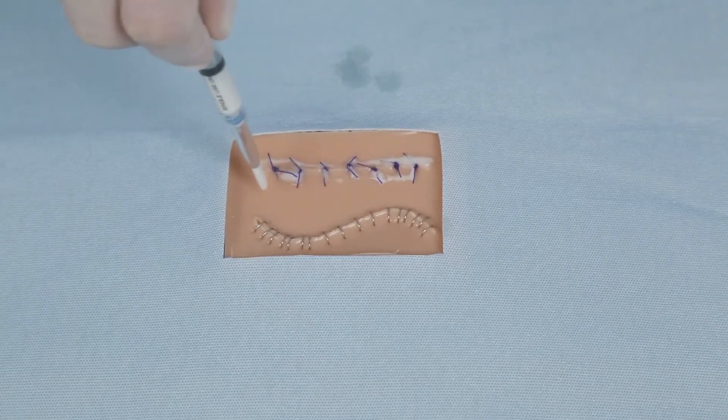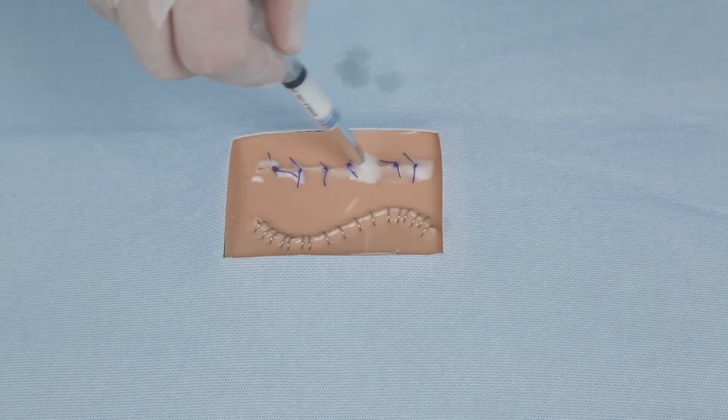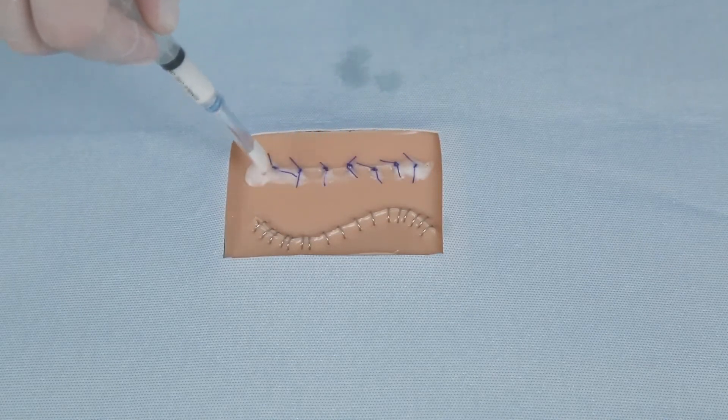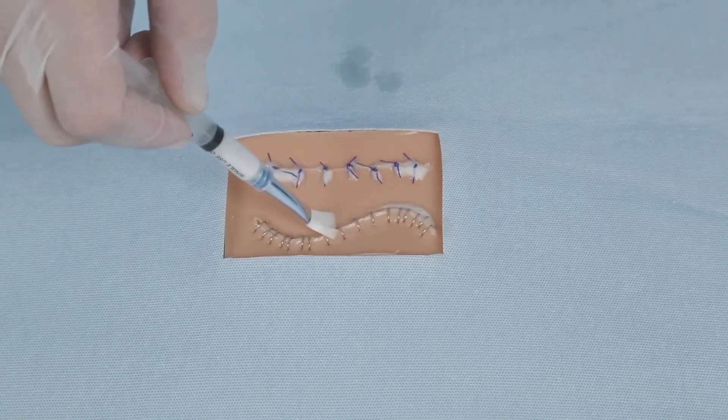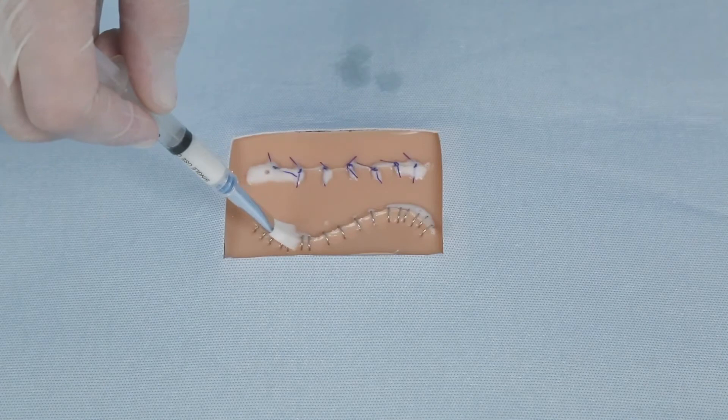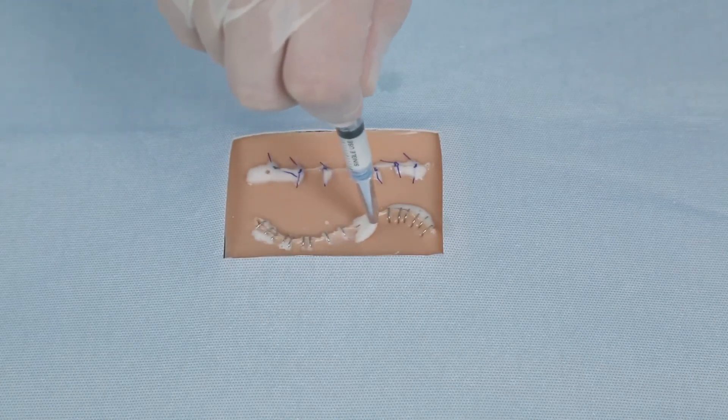Slowly push the syringe plunger until the SutureSeal polymer begins to dispense from the brush tip. Brush the SutureSeal polymer over the suture line or wound area in a thin even layer. SutureSeal is sometimes difficult to see because it is transparent or a milky white color. Runoff of excess liquid is expected.